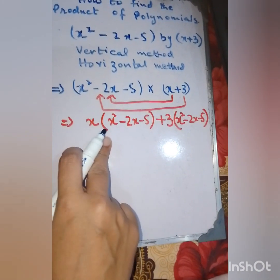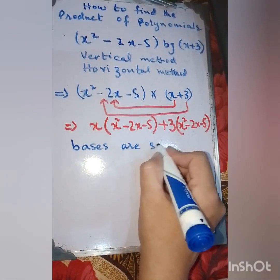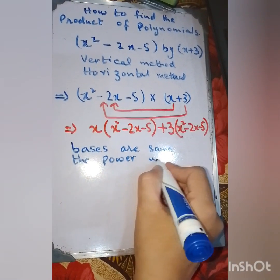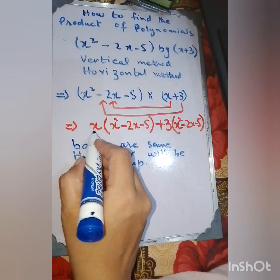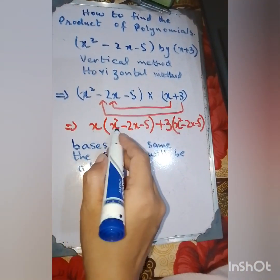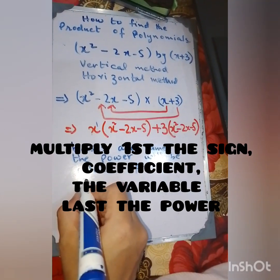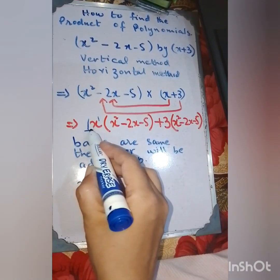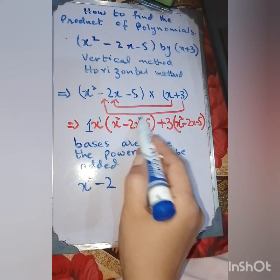Now we remove the brackets and apply the exponent rule: when the bases are the same, the powers are added up. So x times x squared — both have the same base, powers 1 plus 2 equals 3 — gives x cubed. Then minus sign stays, and x times 2x: coefficient 1 times 2 is 2, and x times x with powers 1 plus 1 equals 2, giving minus 2x squared.